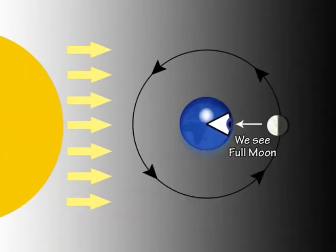When we can see all of the Sunlit side of the Moon, it is a round shape called the Full Moon.